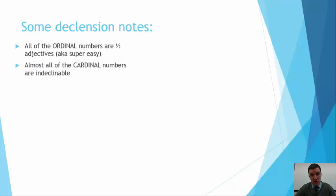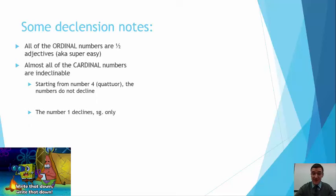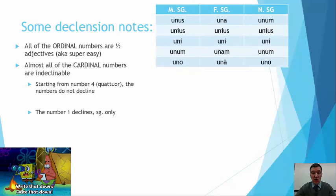Almost all of the cardinals are indeclinable. Starting at the number 4. So once you hit quatuor, they're indeclinable. You don't need to worry about them. But the other ones that we do have to worry about. The number 1 declines. And obviously, as the number 1, it's singular only. If you made the number 1 plural, it's not number 1 anymore. It would be, at the very least, number 2, if not anything further than that.